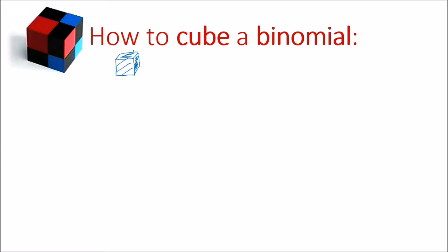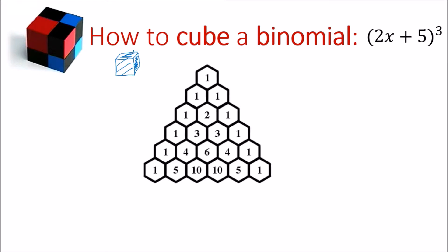For this first problem, the side lengths of the cube are going to be 2x plus 5. So to find the volume of a cube with a side length of 2x plus 5, we're going to work out (2x + 5) to the power of 3, which is the same as saying 2x plus 5 cubed. To work out the expanded form of this cubed binomial we're going to make use of Pascal's triangle.